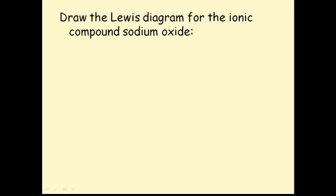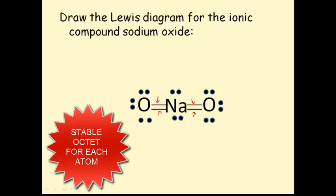Draw the Lewis diagram for the ionic compound sodium oxide. This is more challenging. Pause the video and give it a try. Here's the compound. You can see that there are straight lines representing bonds showing that sodium and oxygen form a double bond over here. And sodium and the other oxygen form another double bond over here. And each one of these atoms now has a stable octet in its outer shell.